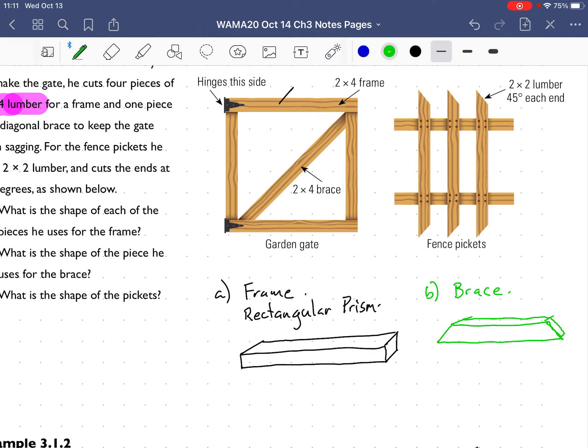So this will be the net for this trapezoidal prism. Okay, so this here would be this front face, this would be this top face, this would be a bottom face down here like this. This end piece would be here and this end piece will be here.